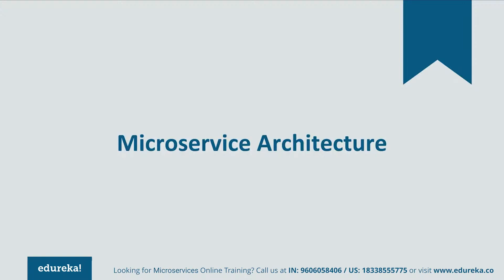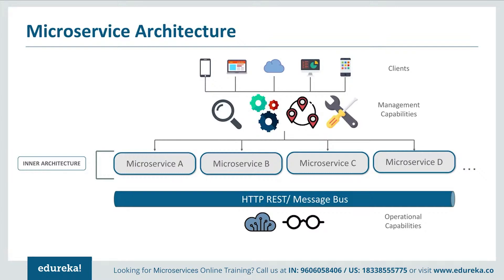Let's look at the different components of the microservice architecture. The architecture starts with different clients from different devices performing different management capabilities such as build, search, notification, and so on. Each functionality is segregated into separate microservices handling their own data — for example, microservice A handles search, microservice B handles build, microservice C handles notifications, and so on. All these individual microservices have their own load balancing and execution environments, communicate with each other through REST or message bus, and client requests are passed to the internal architecture through an API gateway.